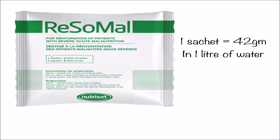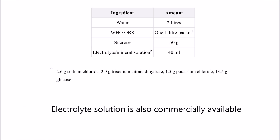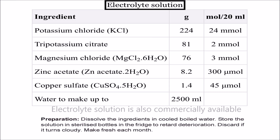ReSoMal is used for patients with malnutrition and is prepared in one litre of water; the packet size is 42 grams per litre. Water should be clean — if not, it should be boiled and then cooled. If ReSoMal solution is not available, it can be made from normal ORS: take two litres of water, one WHO ORS packet, 50 grams of sucrose, and 40 ml of electrolyte and mineral solution. The electrolyte solution is prepared from potassium chloride, tri-potassium acetate, magnesium chloride, zinc acetate, copper sulfate, and water up to 2.5 litres. Each time, take 40 ml of this electrolyte solution, add it with the ORS and two litres of water to make the ReSoMal solution.